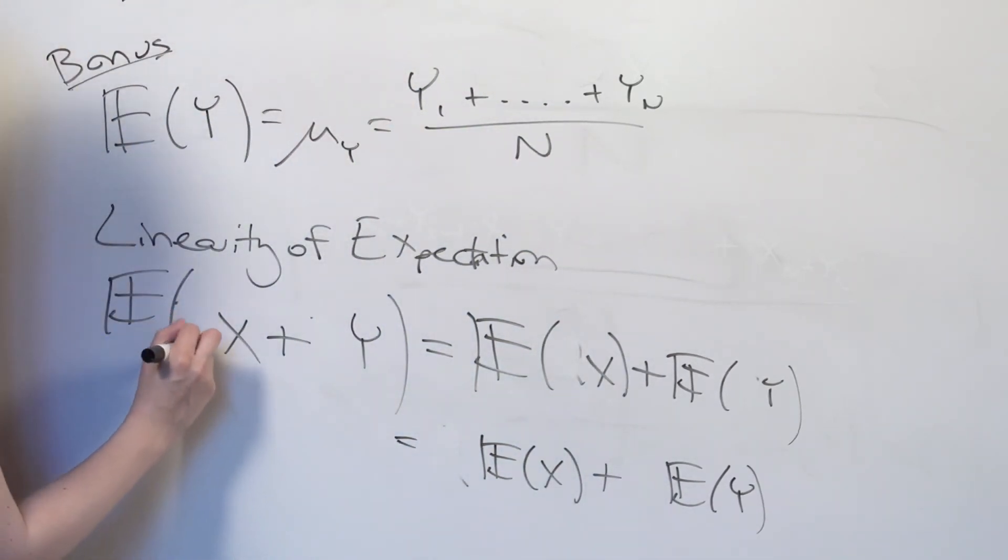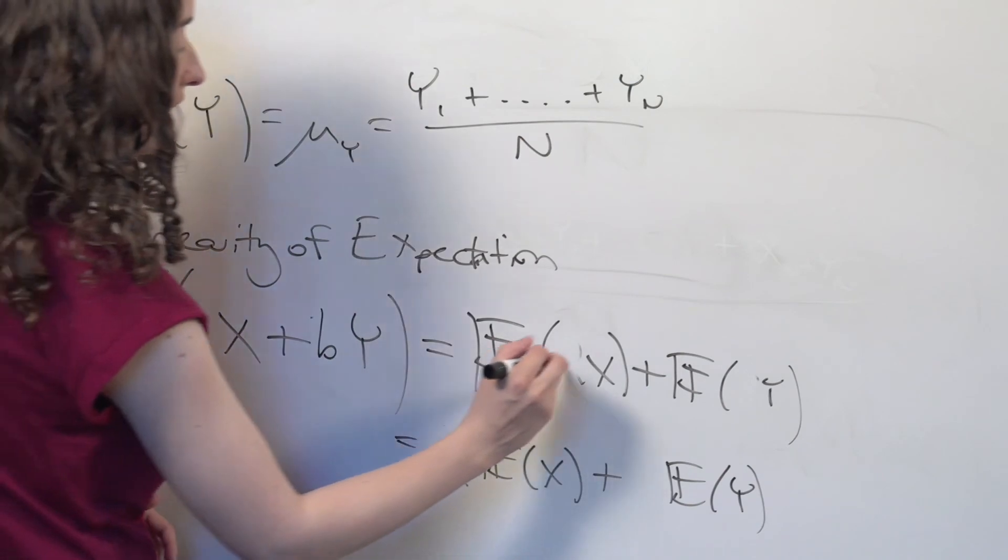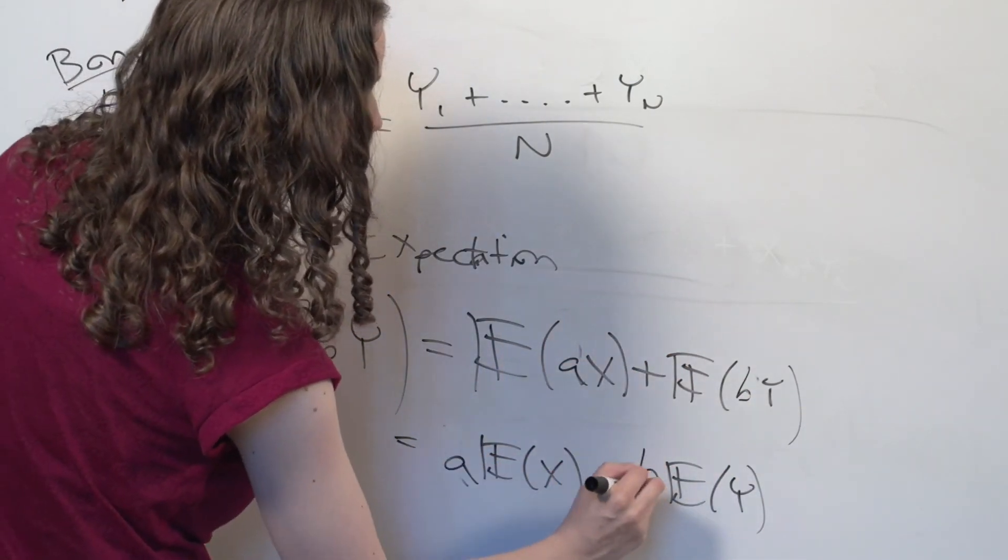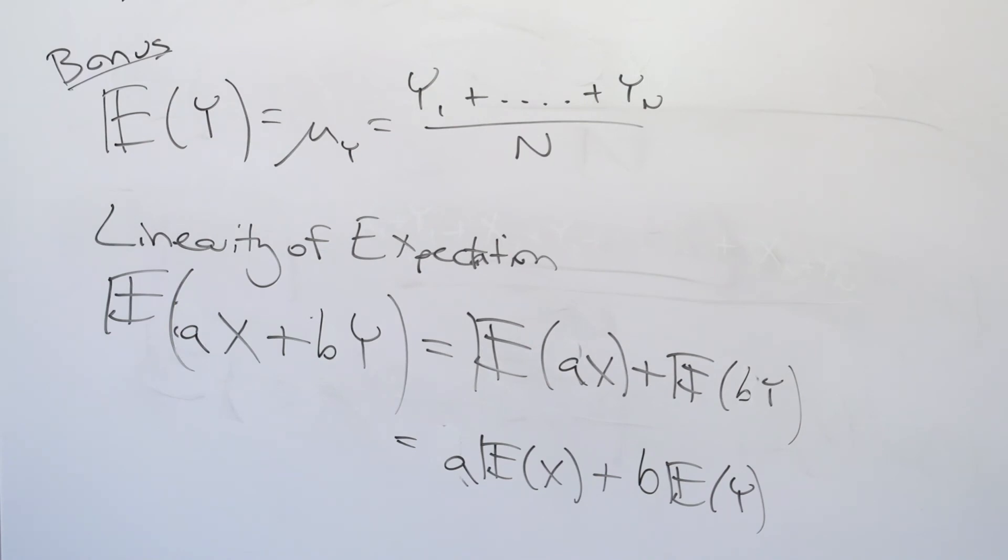So the expected value of AX plus BY is equal to A times the expectation of X plus B times the expectation of Y. And this property will come in handy as we try to demonstrate various concepts.